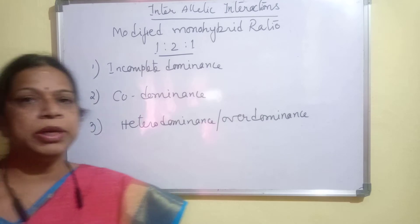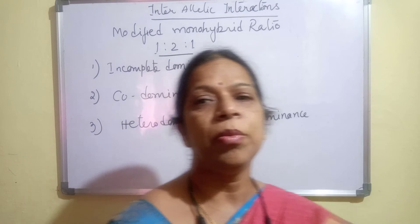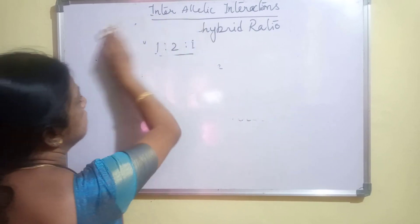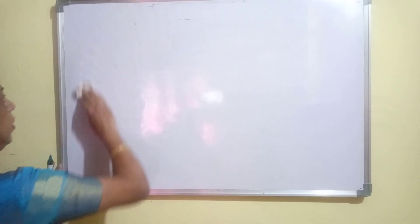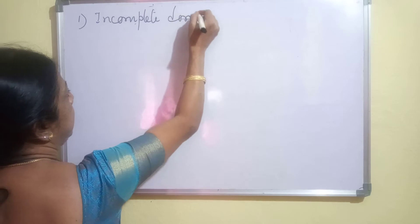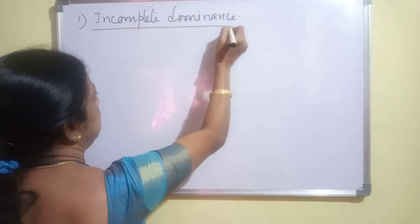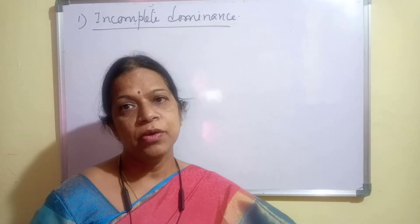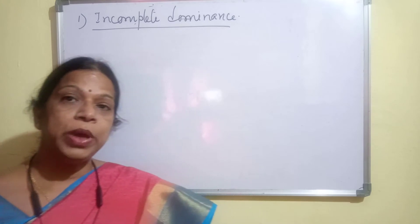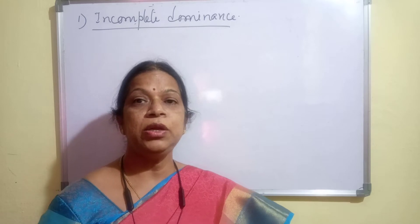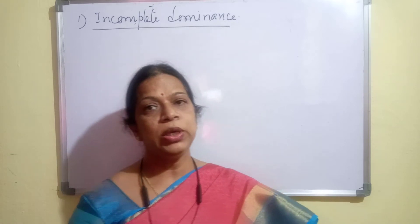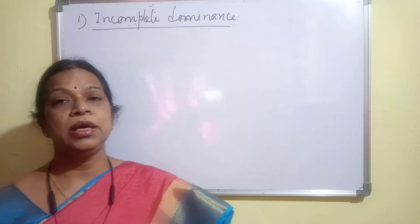Let us start with incomplete dominance. We will discuss it with examples. In incomplete dominance, when any character is in heterozygous condition, both the alleles — both the characters — will express themselves. When both are expressed, a totally different phenotype is obtained. That is what is called as incomplete dominance.